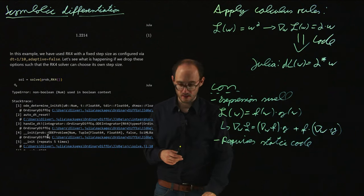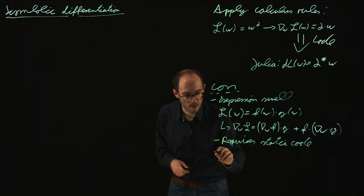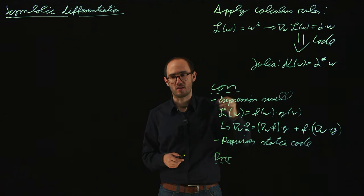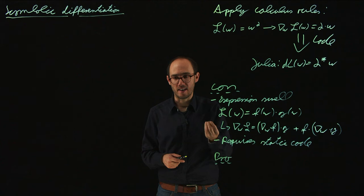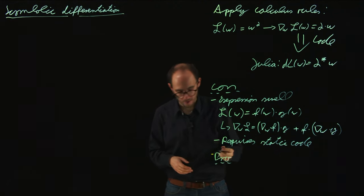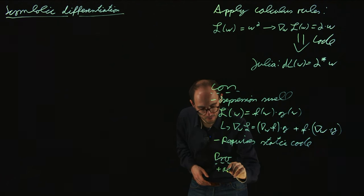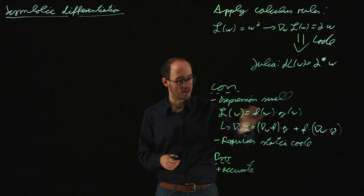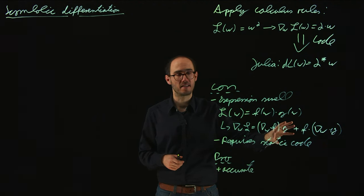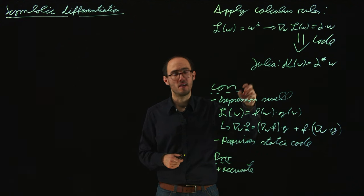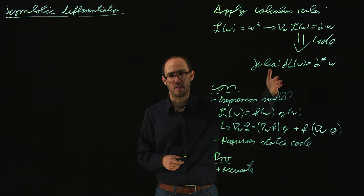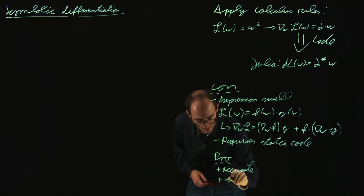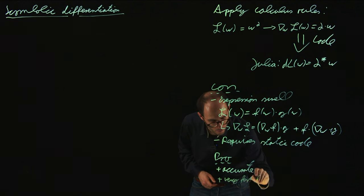However, there are of course also positive elements about it, and that is of course that if I apply the symbolic differentiation, that the symbolic differentiation as such is not any kind of approximation, it is basically the ideal and very accurate solution of the gradient or the Hessian. So we have a very high accuracy. So it is accurate. And also, if we have small problems where these requirements, especially the static code requirement applies, then that can be also quite efficient because we can calculate much of the derivatives beforehand, before runtime, and then re-utilize it during runtime. So especially for small problems, it might be also very fast.